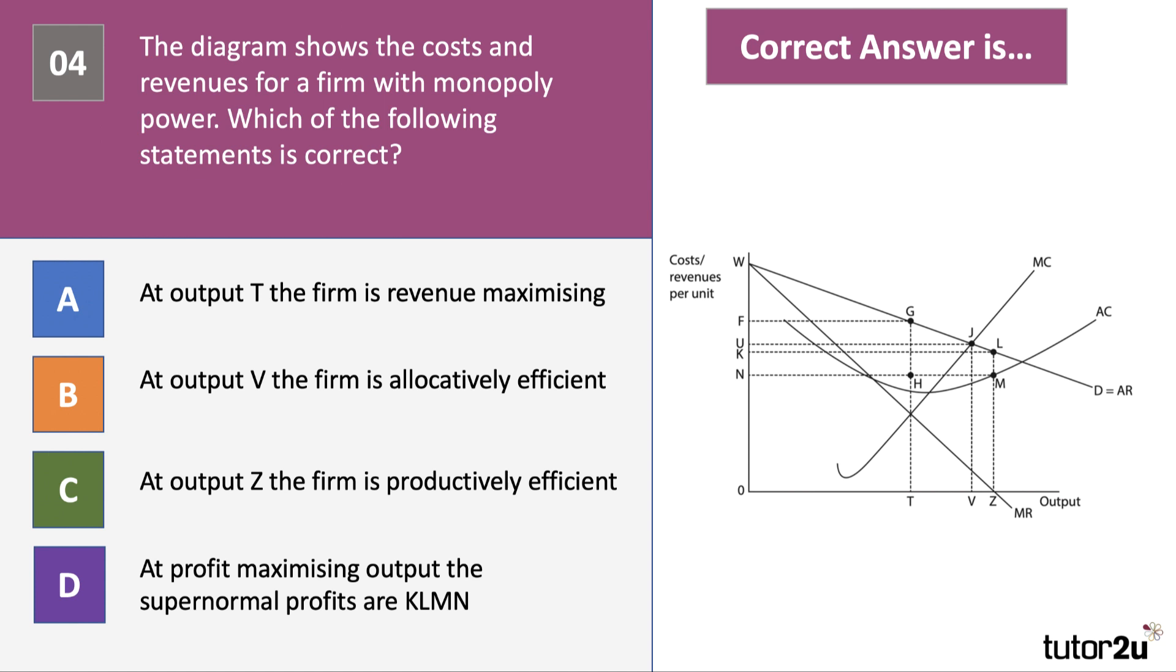So what did you get for question 4? Let's work through. At output T the firm is revenue maximizing? No, that would be output Z, that's where marginal revenue is zero. At output V the firm is allocatively efficient? The answer to that is correct, because that's where price, which is OU, equals the marginal cost of supply. Just to double check: at output Z the firm is productively efficient? No, they've moved beyond the minimum point of their average cost curve. And at profit maximizing output the supernormal profits are KLMN? Well, profit maximizing output is output T and the profits are equal to the area FG. So the correct answer is B.